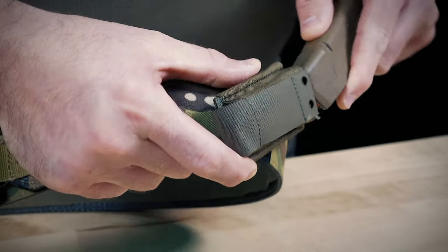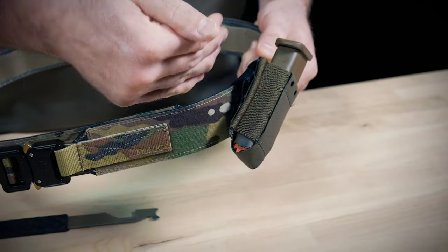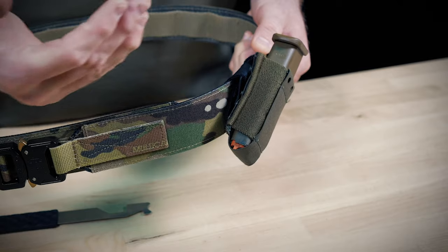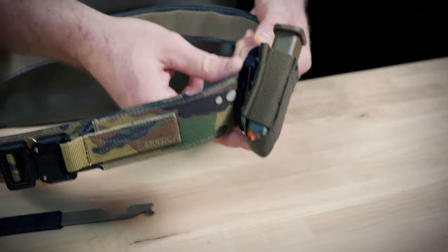The 90 degree adapter works exactly the same way. Just the difference is, instead of mounting the pouch at a 40 degree angle, it mounts a vertical pouch horizontal if that's your speed.